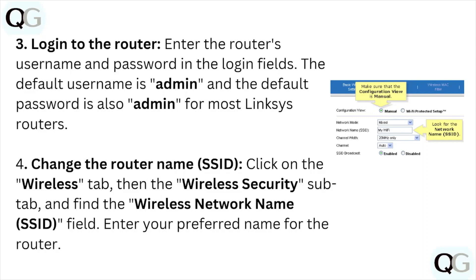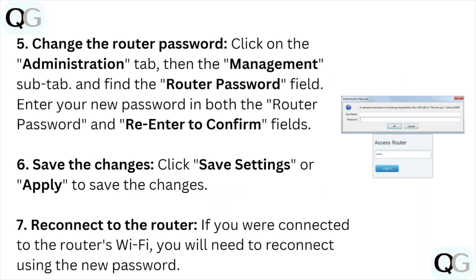Enter your preferred name for the router. Step five: change the router password. Click on the Administration tab, then the Management sub-tab, and find the Router Password field. Enter your new password in both the Router Password and Re-enter to Confirm fields.